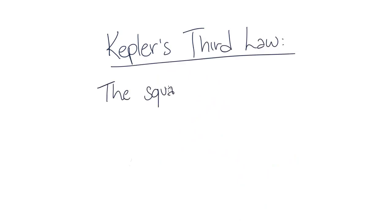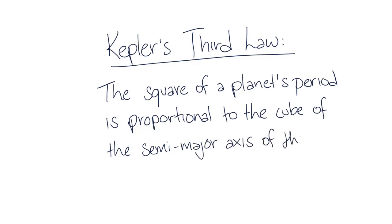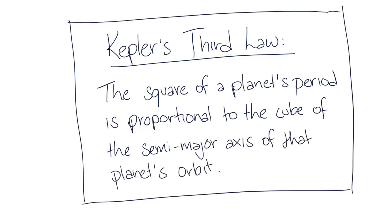Kepler's third law tells us that the square of a planet's period is proportional to the cube of the semi-major axis of that planet's orbit. And, because the mass of the Sun is so much larger than the mass of the planets, then for all planets in our solar system, the proportional factor is approximately the same.